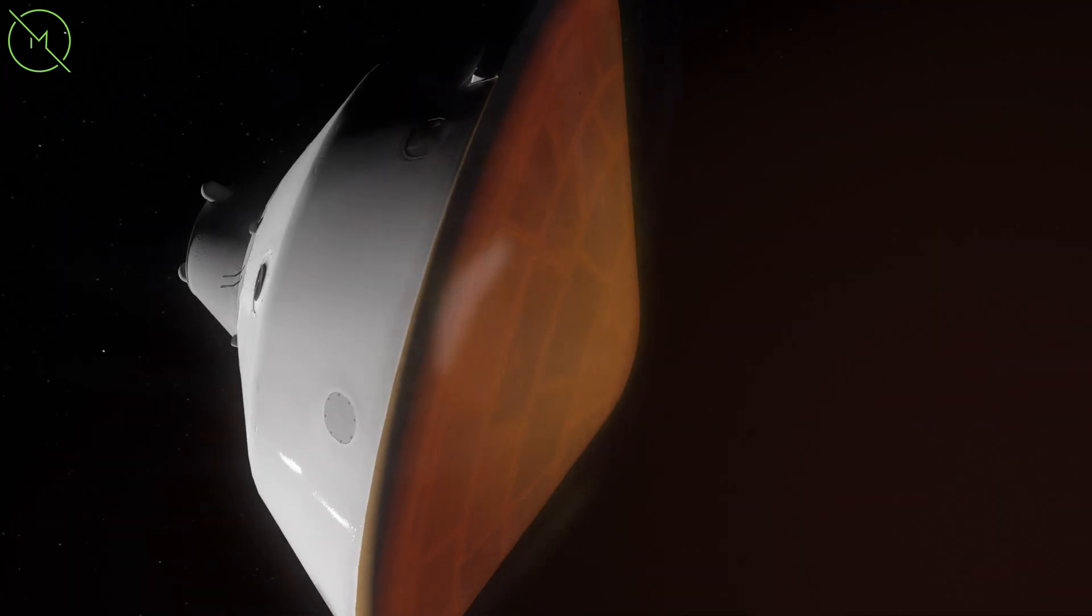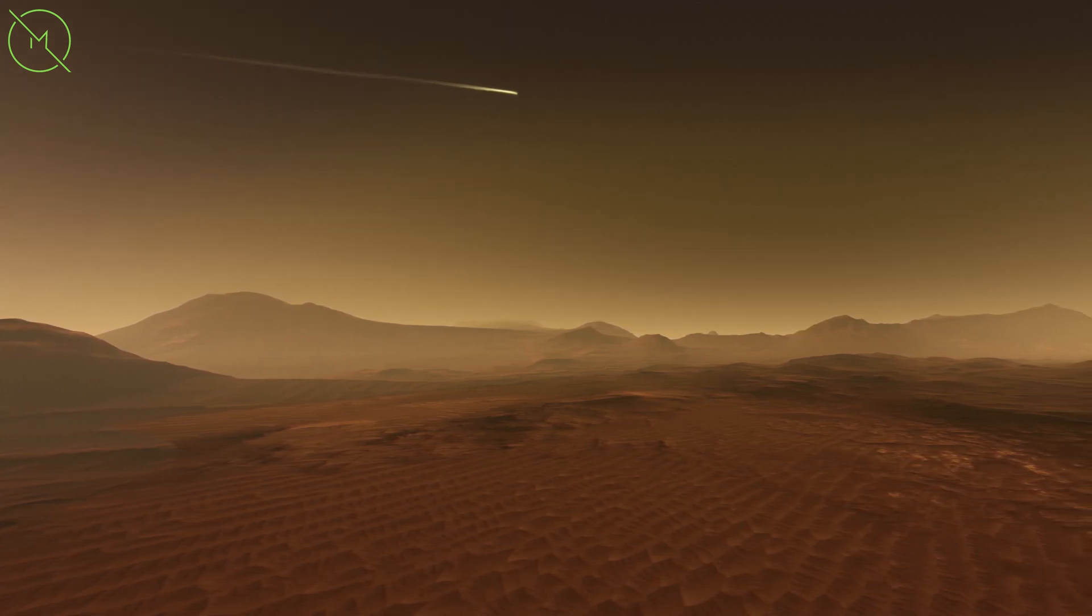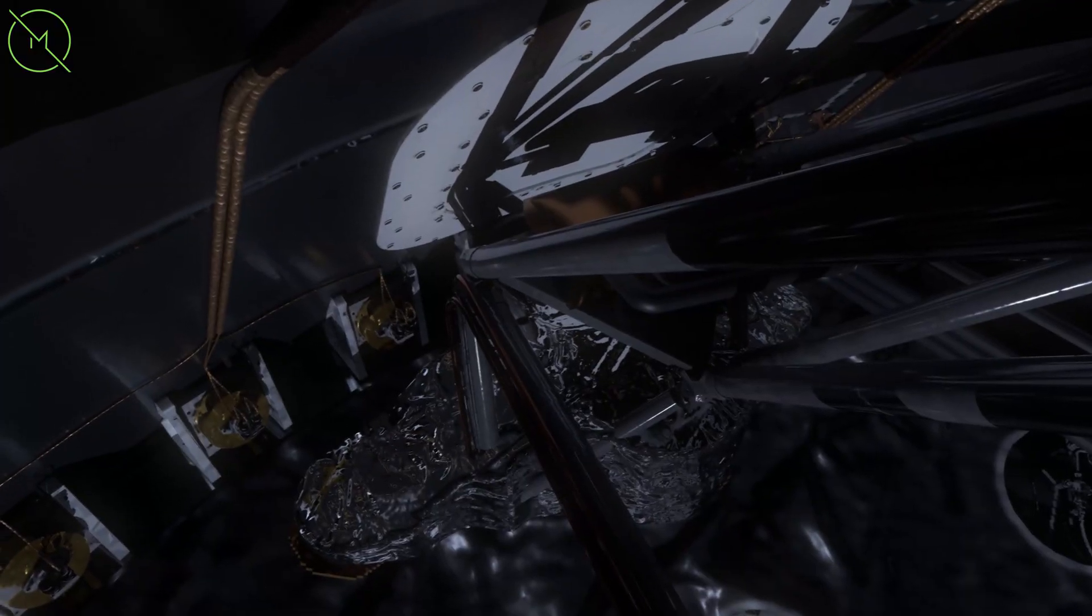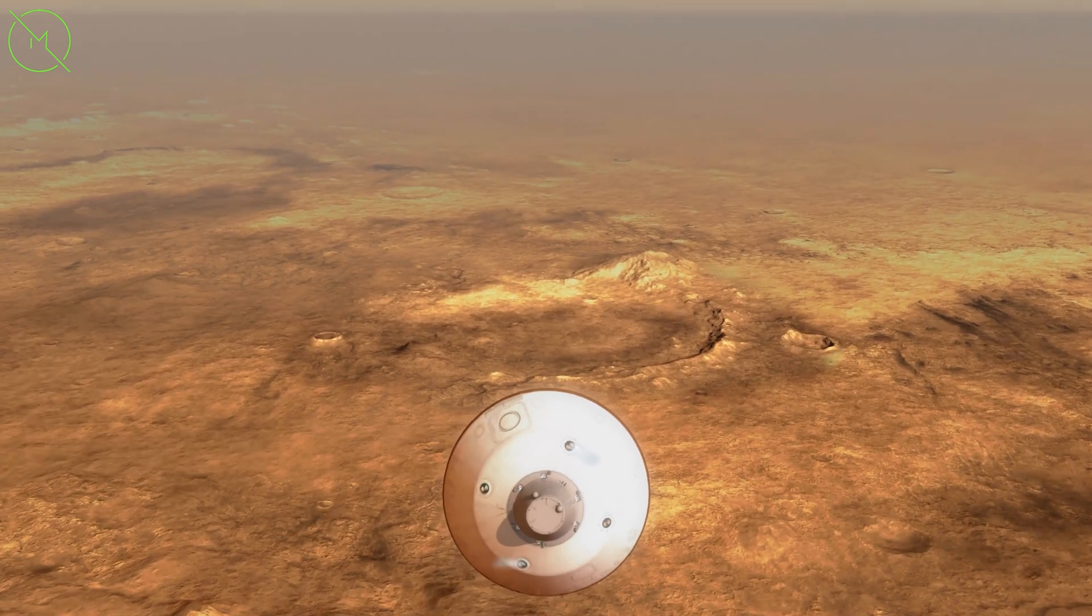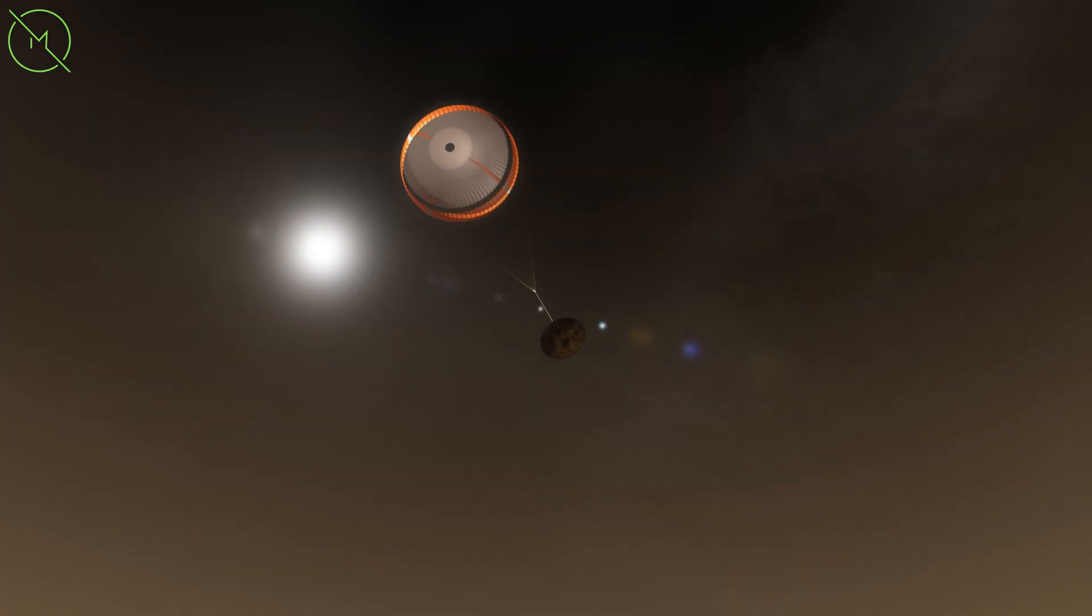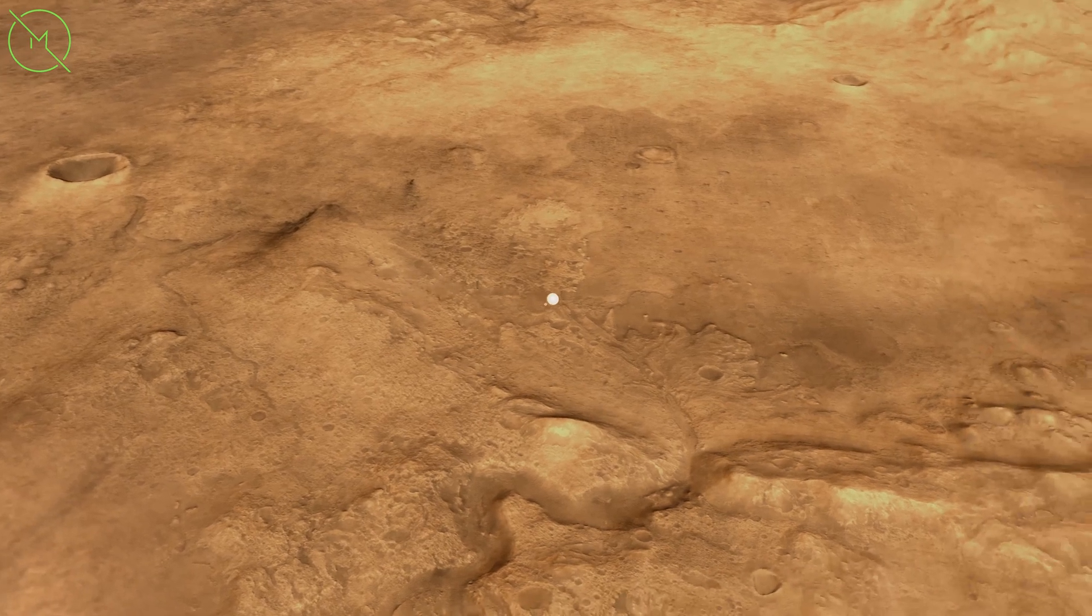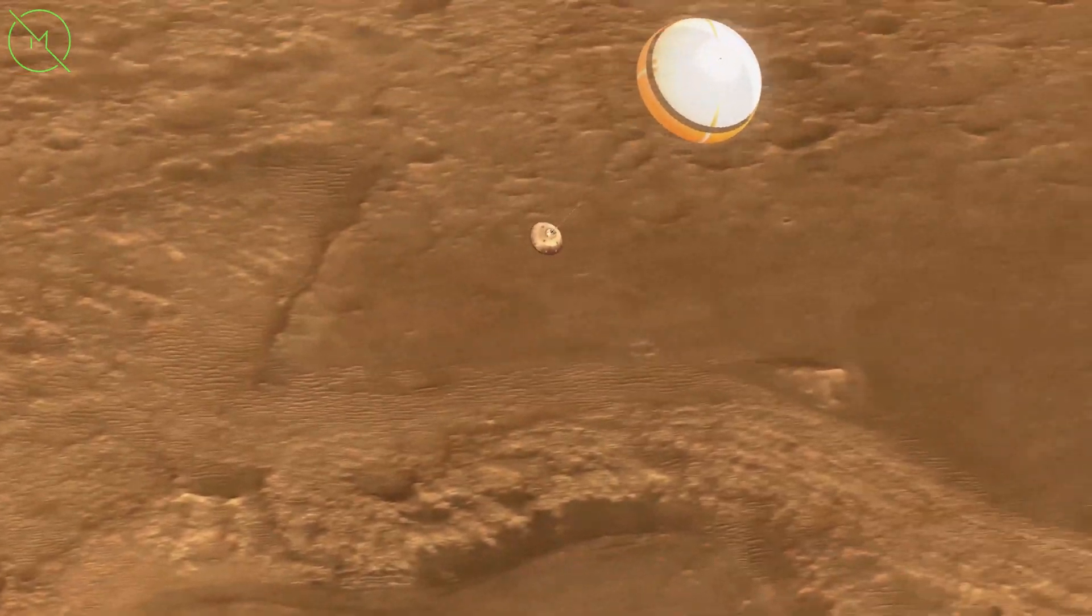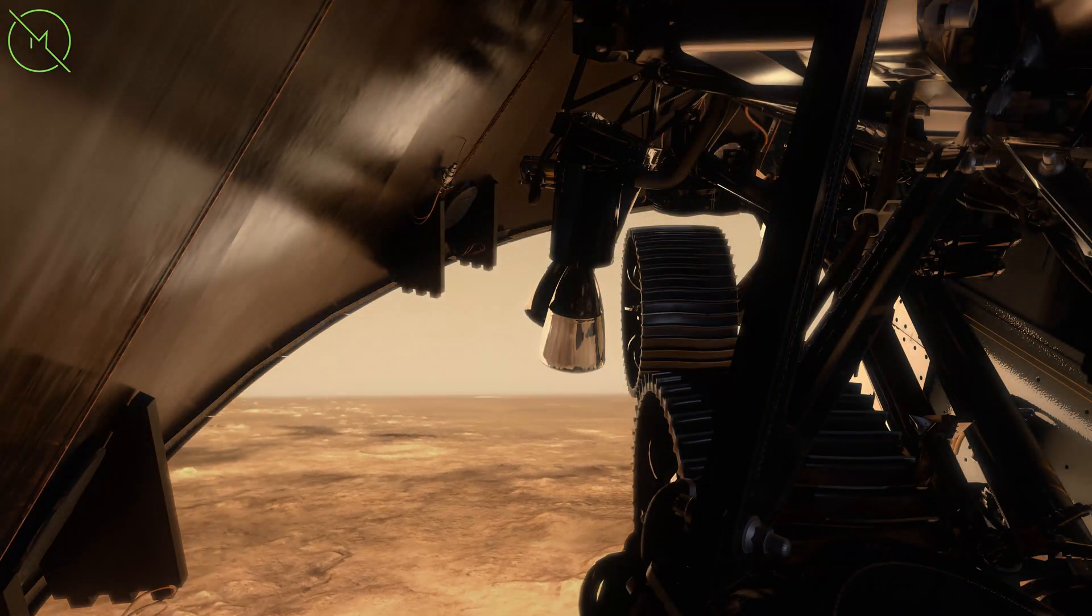As the rover approaches Martian atmosphere, it de-spins, and the aeroshell, as you can see, protects it from the insane heating it will experience. You will experience vibration as a result. And then at a certain point in velocity, you're going to deploy the parachute to slow it down significantly.